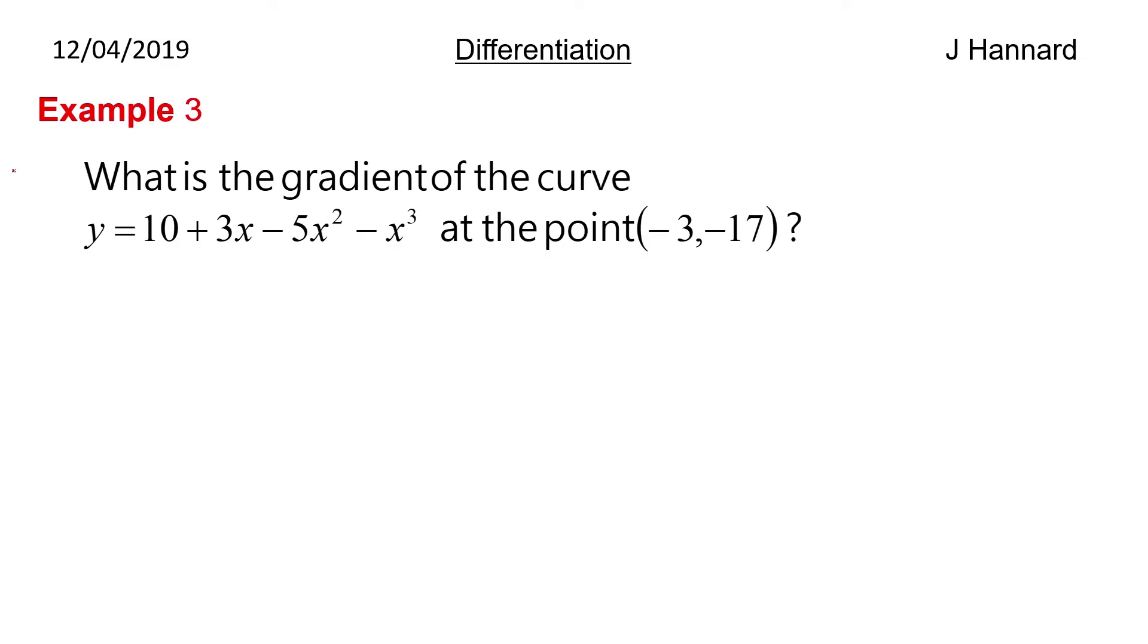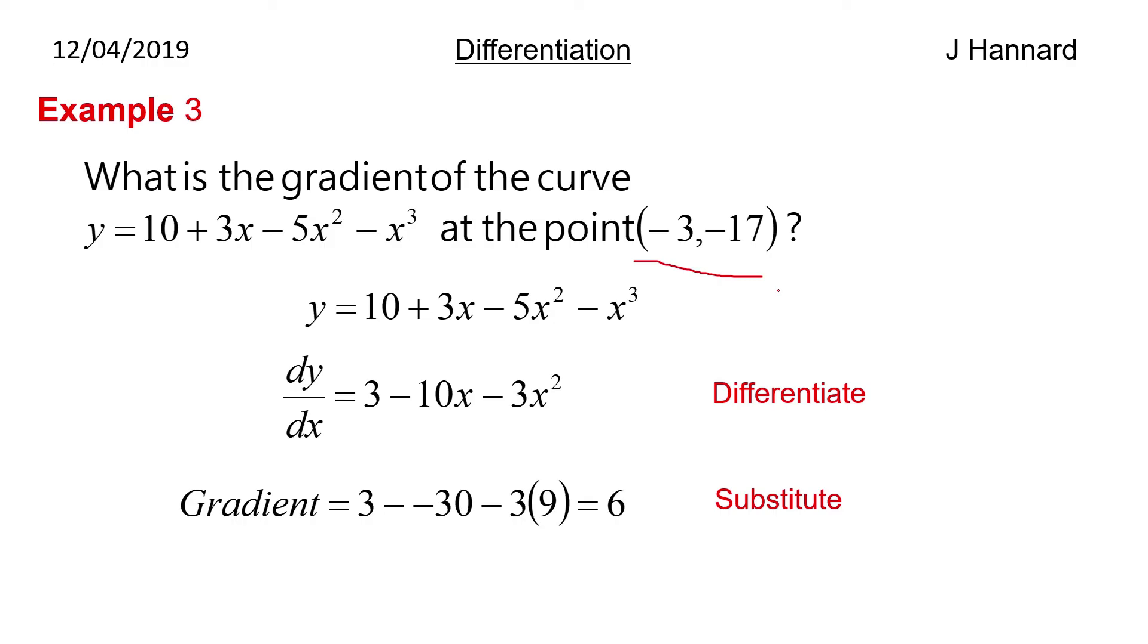Next, what is the gradient of the curve y equals 10 plus 3x minus 5x squared minus x cubed at the point (-3,-17)? So lots of negatives in here to try and trip you up. Same as before we work out what dy by dx is. Bring the power to the front, knock 1 off the power. So we get 0 plus 3 minus 10x minus 3x squared. And then we're told a specific point to find this gradient at, (-3,-17). So we plug this minus 3 into dy by dx. And we get 3 minus minus 30 minus 3 times 9 which is obviously 27. So that equals 6. So the gradient of the curve at that point is 6.